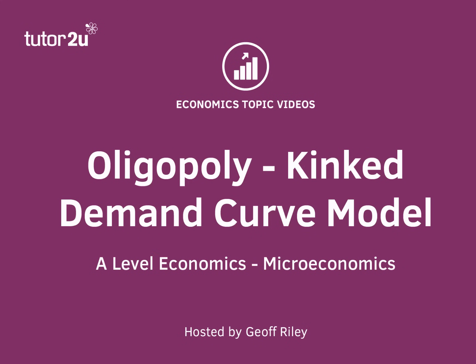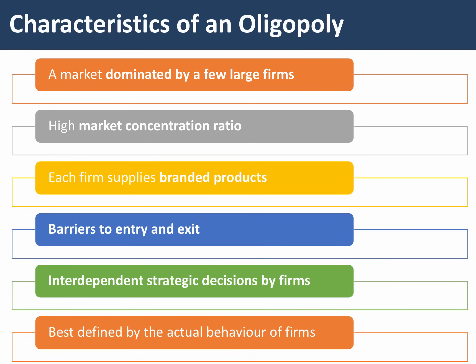In this revision video we're going to be looking at an aspect of oligopoly theory — the kinked demand curve model. Before we get into the model, a few words on the key characteristics of an oligopoly. This is a market structure dominated by a few large businesses with a very high market concentration ratio. Typically the leading five businesses together have more than 60% of the market share. Each firm supplies branded products and there are barriers to entry and exit, which means existing players can continue to earn supernormal profit.